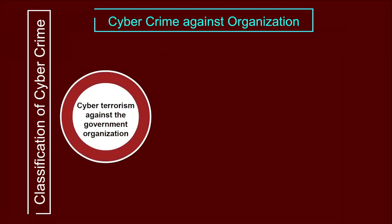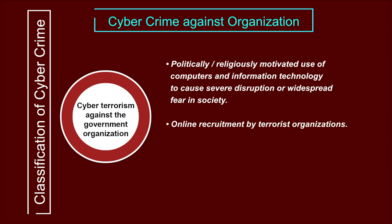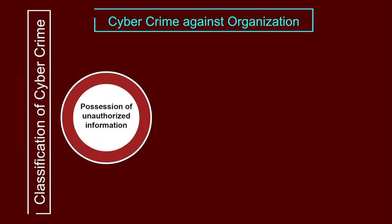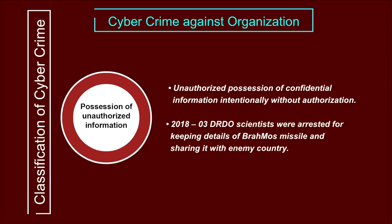The second crime under this category is cyber terrorism against government organizations. Cyber terrorism refers to politically or religiously motivated use of computers and information technology to cause severe disruption or widespread fear in society. It includes online recruitment by terrorist organizations, online mobilization of people through hate speech, videos, or images to act against the government. In October 2018, three DRDO scientists were arrested for keeping and sharing Brahmos missile secrets with enemy countries — an act of unauthorized possession of confidential information under cybercrime law.